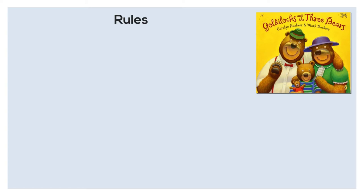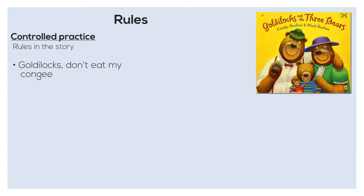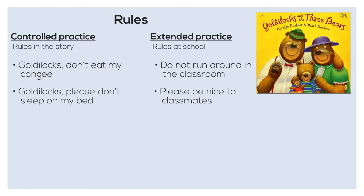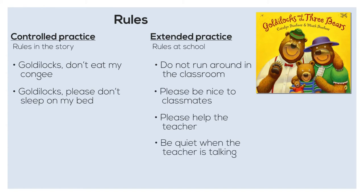What's the difference between the two? For example, when reading the story of Goldilocks and the three bears, you might want to teach students rules. Controlled practice would focus on practicing speaking or writing rules related to the story — for example, 'Goldilocks, don't eat my congee' or 'Goldilocks, please don't sleep on my bed.' For extended practice, you may extend the speaking and writing practice to rules at school — for example, 'Do not run around in the classroom,' 'Please be nice to classmates,' 'Please help the teacher,' or 'Be quiet when the teacher is talking.'